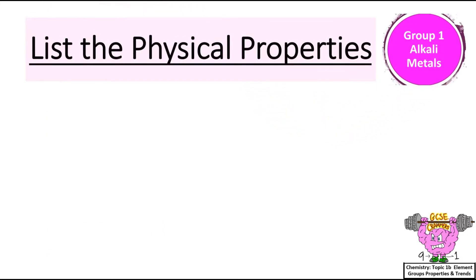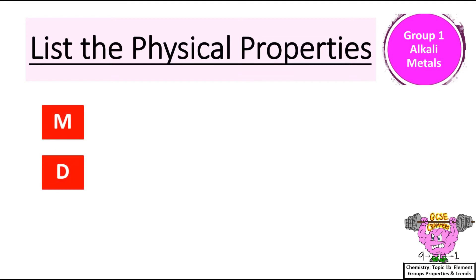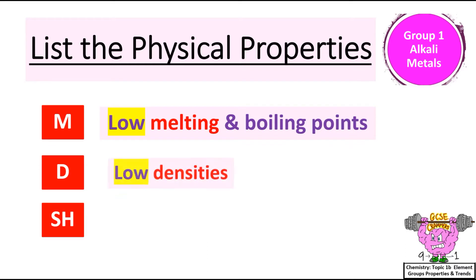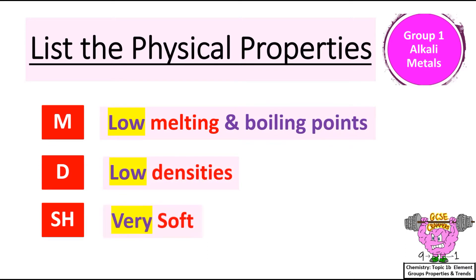List the physical properties of Group 1 Alkali Metal Elements. I remember these by using the acronym MDSH, or the mnemonic MY DAD'S SHOCKING! M for melting point, D for density, and SH for whether they're soft or hard. Group 1 Alkali Metals have low melting and boiling points, low densities, and they're very soft.